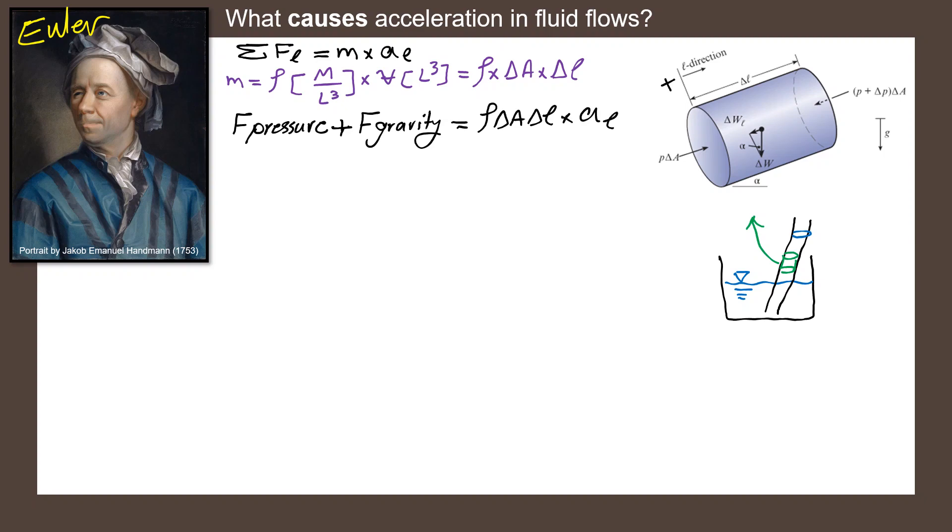Now, let's calculate different forces. I'm going to call this equation equation number one. I'm going to start with forces due to pressure. It would be basically the difference between forces on two sides of this cylinder. So I'm going to write PΔA minus (P + ΔP) times ΔA. It would be negative ΔP times ΔA.